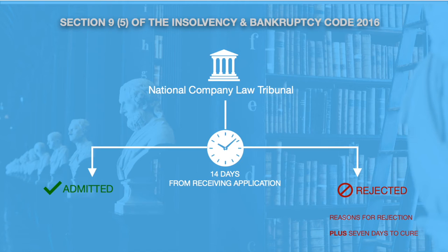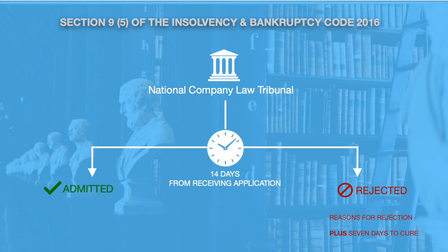Under Section 9, subsection 5, the adjudicating authority has 14 days from the date of submission of the application to either admit or reject the application. In case of rejection, the adjudicating authority must provide an opportunity of 7 days to the applicant to enable the applicant to rectify the defects in the claim. These defects are also to be informed to the applicant by the authority.